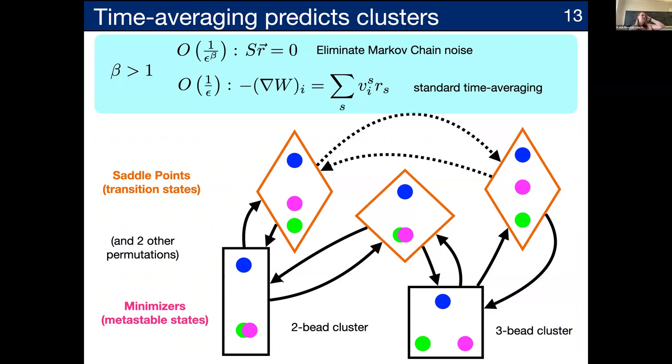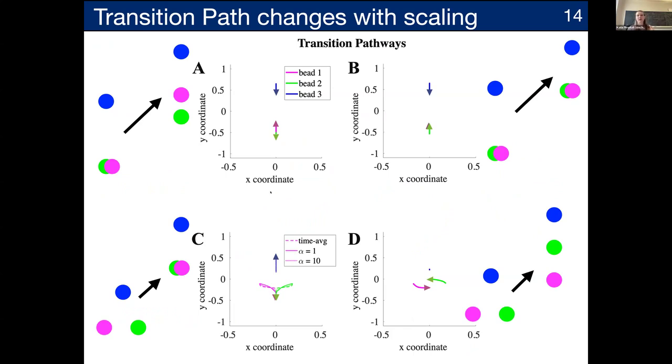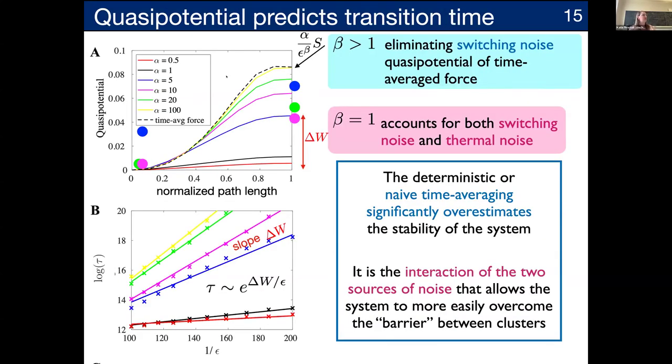Great. So okay. So what do you end up with? So the time averaging is not completely useless. The time averaging does predict clusters, and you can explore those fixed points and look for the states. So you end up with two energy or effective energy minimizing states, a two bead cluster with two beads nearby and one far away and a three bead cluster, and then some transition points in between those. But we'd also really, what we'd like to do is understand how long it takes for the chromosomes to make these transitions. And so that's where the quasi potential comes in.